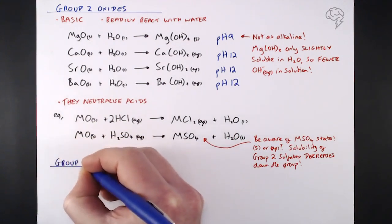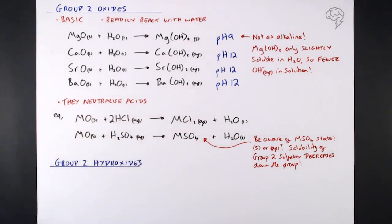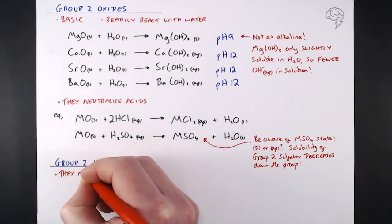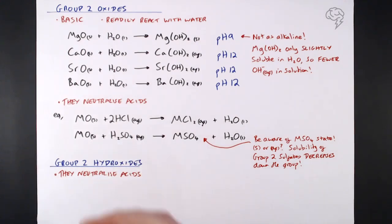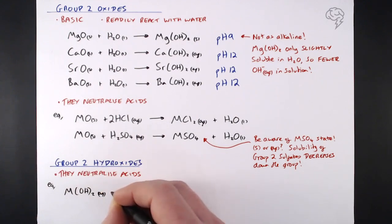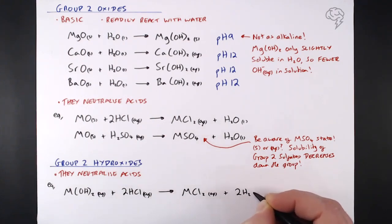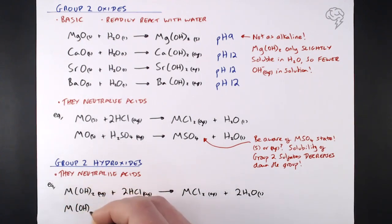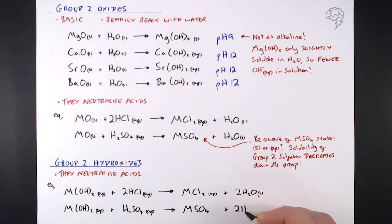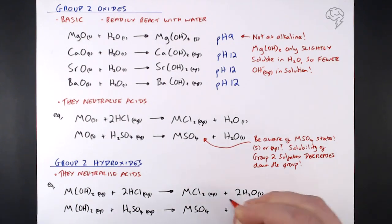Group 2 hydroxides are also basic — most are alkalis because they dissolve — so they also neutralize acids. M(OH)₂(aq) reacting with 2 HCl gives the metal chloride and water. With a diprotic acid: M(OH)₂ reacting with sulfuric acid gives the metal sulfate and water — another classic neutralization forming salt and water. Again, be careful with the state symbol for the sulfate: magnesium sulfate is soluble, calcium sulfate is partially soluble, but strontium and barium sulfate are very much insoluble.